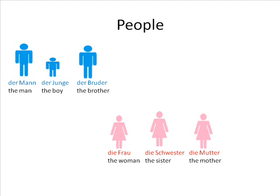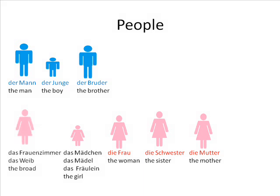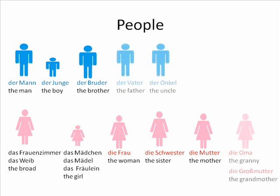The first exception to this is girl, which always comes out as neuter, whether the word used is 'Mädchen', 'Mädel', or 'Fräulein', because these words have endings which mean that the word has to be neuter. The second exceptions are 'Weib' and 'Frauenzimmer', two rather negative and infrequently used words for a woman, which are also neuter. Anything else — father, grandmother, brother, granny, uncle, etc. — are all their natural gender.